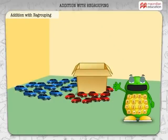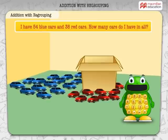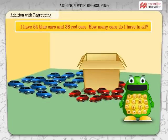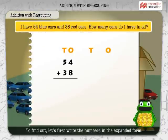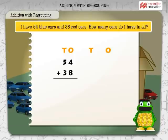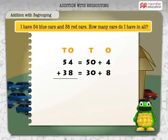That's my collection of cars. I have 54 blue cars and 38 red cars. How many cars do I have in all? To find out, let's first write the numbers in the expanded form. 54 is 5 tens and 4 ones. 38 is 3 tens and 8 ones.